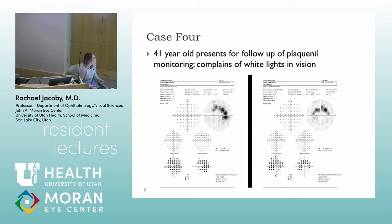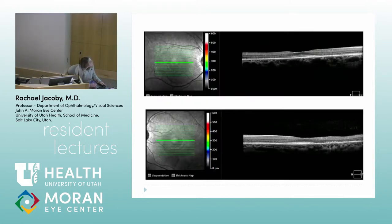Moving on to toxic retinopathies: this is a 41-year-old who came in for Plaquenil monitoring. She's been on Plaquenil for about six or seven years and has been noticing swirling white lights. Her 10-2 visual field showed paracentral scotomas — a pretty typical finding in Plaquenil toxicity. Her OCT showed the classic 'flying saucer sign' with loss of the outer retina and ellipsoid zone in the parafoveal region but preserved subfoveally.